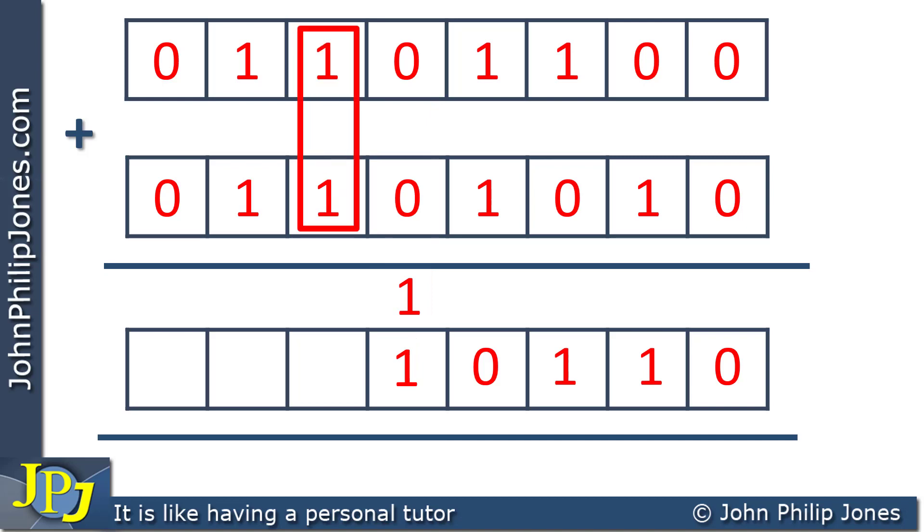We go to this column, and 1 plus 1 is 2, which means we put down the 0 and carry the 1. Now here, we add 1 plus 1 plus 1, which is 3. That means we put a 1 down here and carry a 1. Now we perform this addition, which is 0 plus 0 plus 1, and the result is 1.